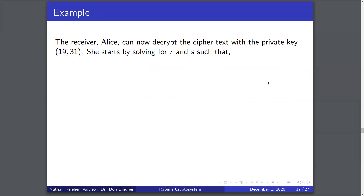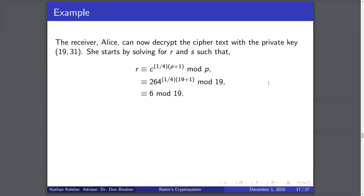Alice can now decrypt the ciphertext with the private key (19, 31). The ciphertext is C = 264. She starts by solving for R and S: R ≡ C^((P+1)/4) mod P, which is equivalent to 6 mod 19 after plugging in the values for C and P. Moving on, S ≡ C^((Q+1)/4) mod Q, and plugging in the values for C and Q, we see that S is congruent to 4 mod 31.